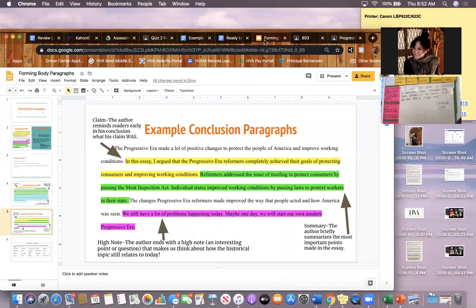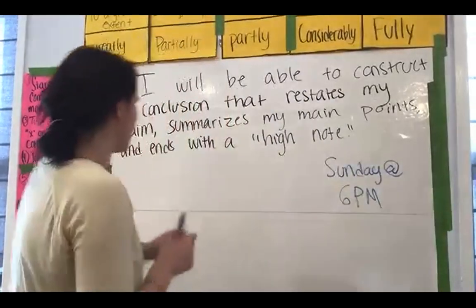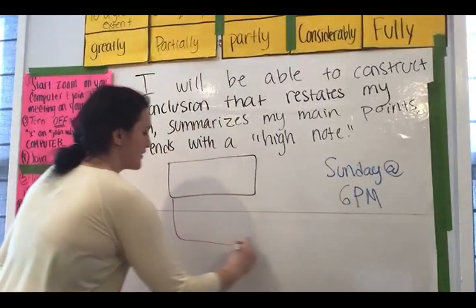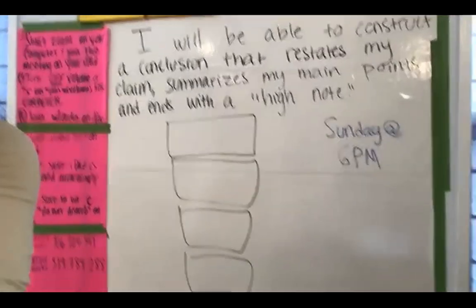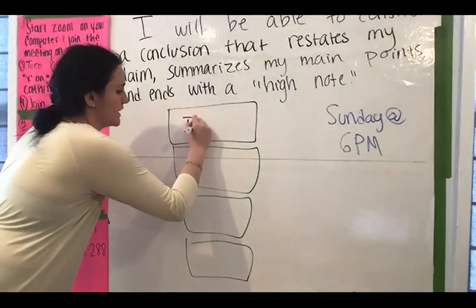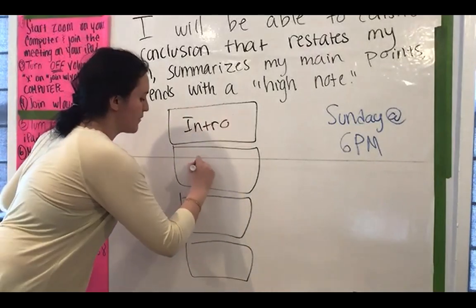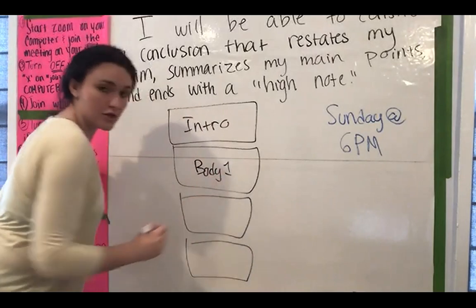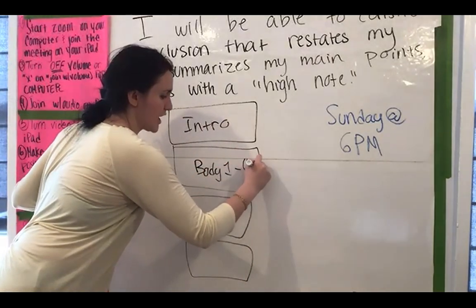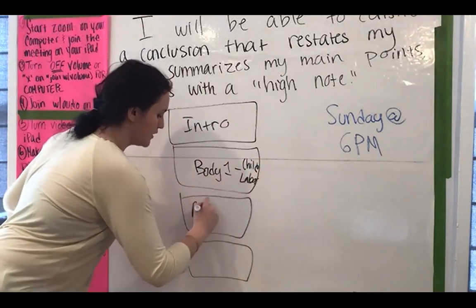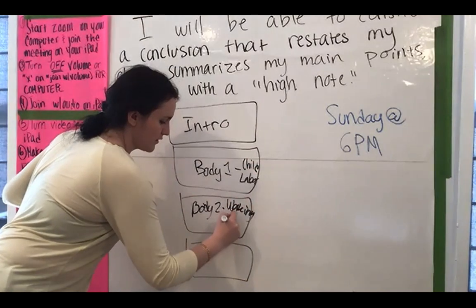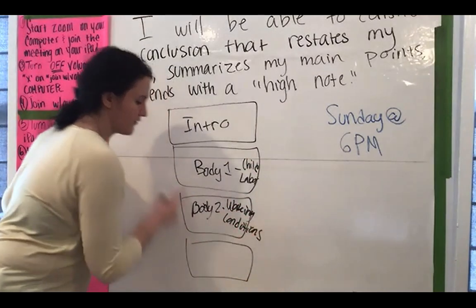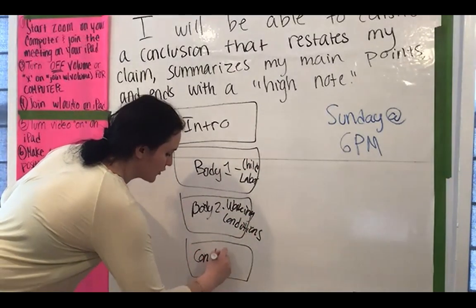That all said, today we're working on conclusions. At this point, remember it's four body paragraphs. I've given feedback on your outlines, so you should already have some next steps. There are four body paragraphs. You have your intro where you introduce your claim. You've got body one — that's going to be one issue, like child labor for some people. Then you've got body two — for some people that might be working conditions. You've got different topics for each body paragraph, and then finally you have your conclusion.